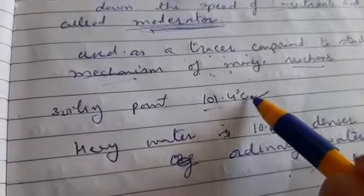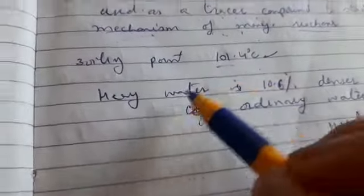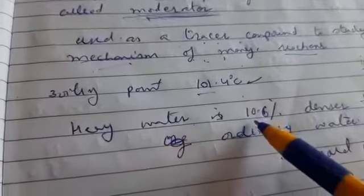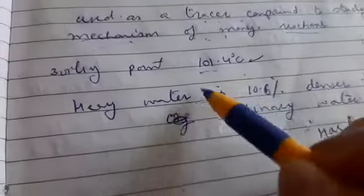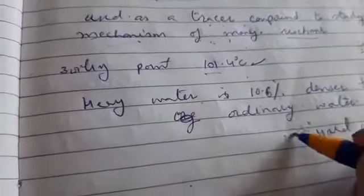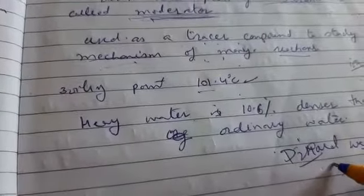The boiling point of heavy water is 101.4 degrees Celsius, and its density is 10.6 percent more than ordinary water. So D2O is denser than normal water.